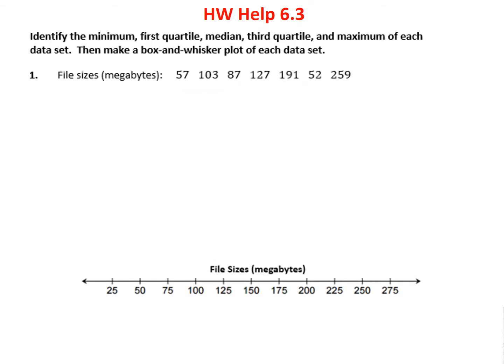Our first problem asks us to find the minimum, the first quartile, the median, the third quartile, and the maximum of this data set, and then make a box and whisker plot. The first thing we always have to do is set these numbers in numerical order, not the order they come in.